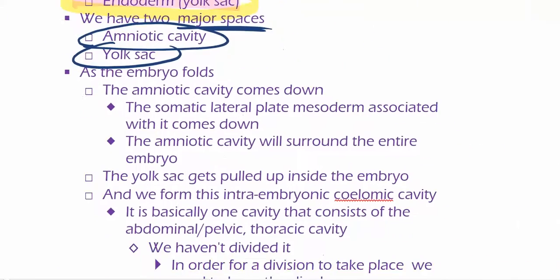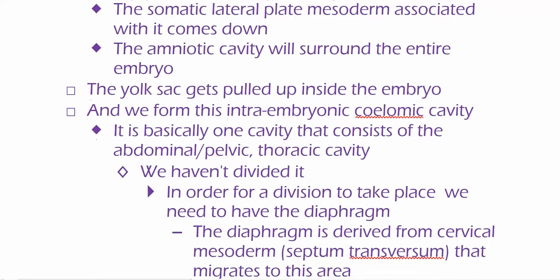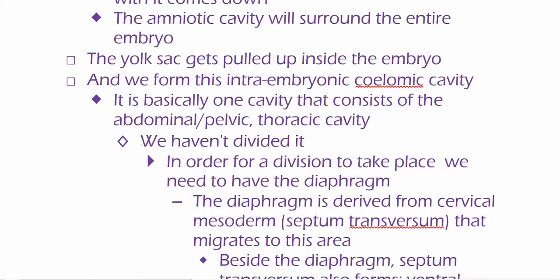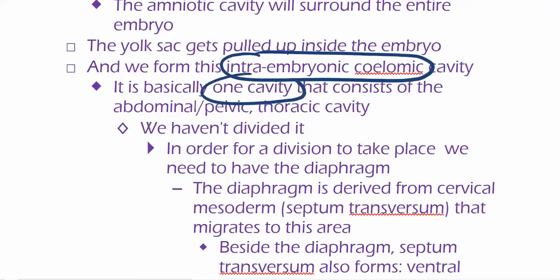The amniotic cavity will surround the entire embryo. The yolk sac gets pulled up inside the embryo, and we form this intraembryonic celomic cavity — which is basically one cavity that will become the abdominal, pelvic, and thoracic cavity.